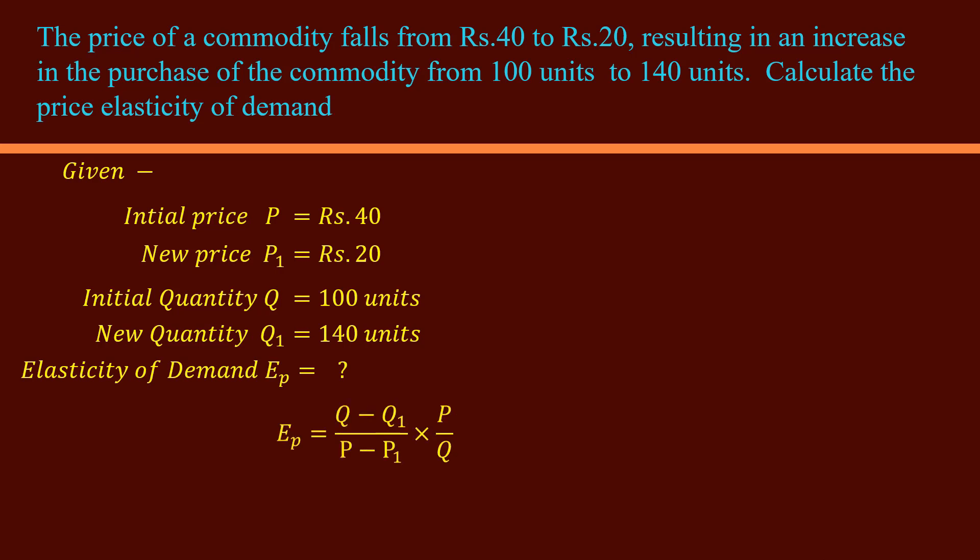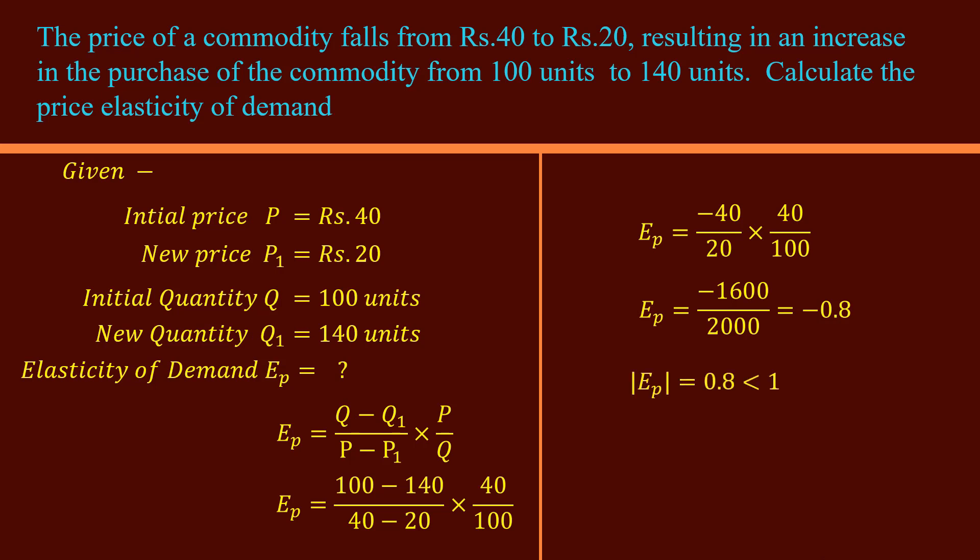State the formula. Substitute the values. Simplify it: 100 minus 140 over 40 minus 20 times 40 over 100. The final value is minus 0.8. In calculating elasticity, we normally ignore the negative sign and take only the absolute value. It is 0.8.